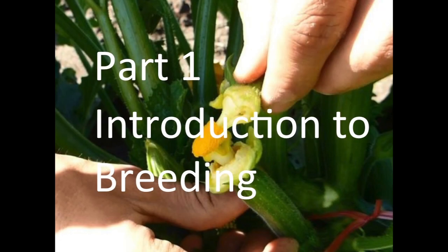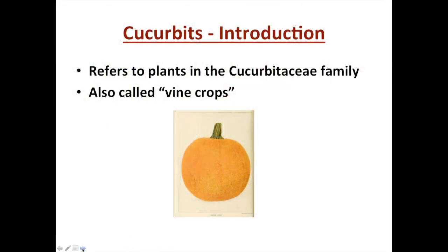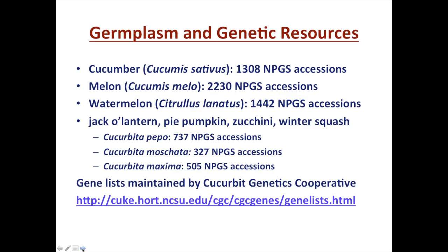The cucurbits is a shorthand that refers broadly to plants in the cucurbitaceae family. Another shorthand, especially in some applied literature, refers to them as vine crops. Collectively, the cucurbitaceae cucurbits include a number of crops many of us are familiar with: cucumber, melon, watermelon, and a number of different squash and pumpkins, all part of the cucurbita genus.